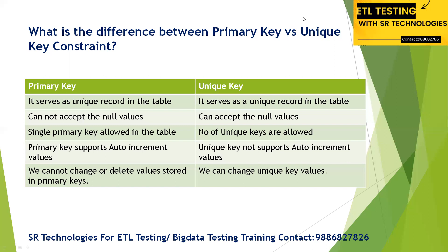A primary key is a combination of two constraints: unique key and not null. When it comes to real data, the primary key is decided by the business. In general, what are the differences between primary key and unique key? Basically, a primary key serves as a unique identifier for a record in the table.